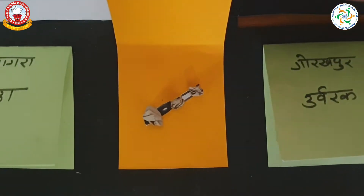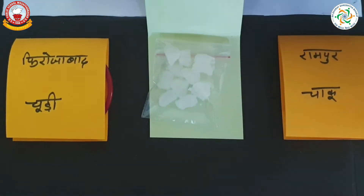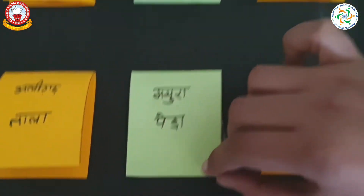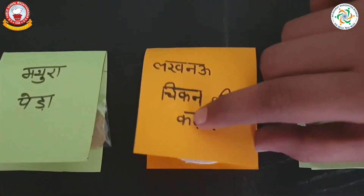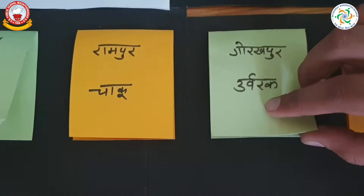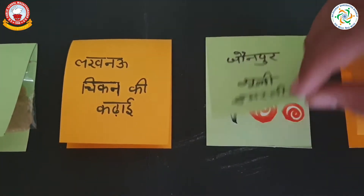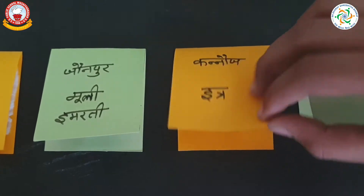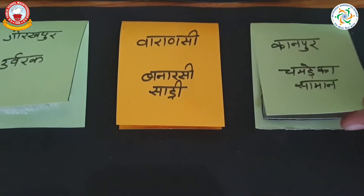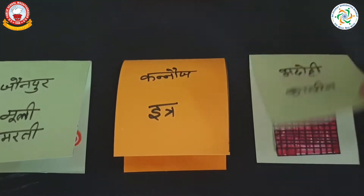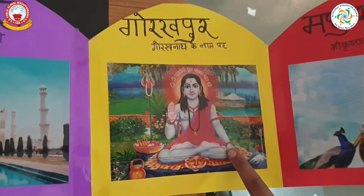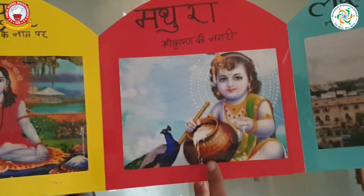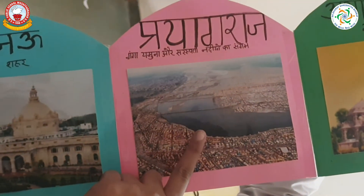These are the famous things of Uttar Pradesh: रामपूर का चाकू, लखनऊ की चिकन की कढ़ाई, गोरखपुर का उर्वरक, जौनपुर की मूली रिमर्दी, वाराणसी की बनारसी साड़ी, कन्नौज का इत्र, कानपुर का चमड़े का सामान, भदोही का कालीन। आगरा ताज नगरी, गोरखपुर गोरखनाथ की नाम पर, मथुरा श्री कृष्ण की नगरी, लखनऊ नवाबों का शहर, प्रयागराज गंगा, यमुना और सरस्वती नदियों का संगम, अयोध्या राम नगरी।